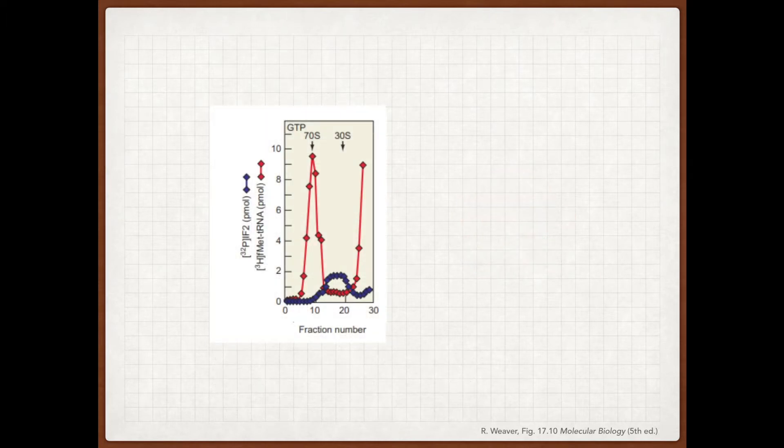So now moving on to the panel on the right, or the GTP column, we see a little bit of difference between the two. The first thing is around 70S here. We can see we have FMET-tRNA still migrating with 70S, but for the IF2, we see this migrating now near 30S.